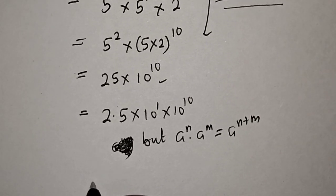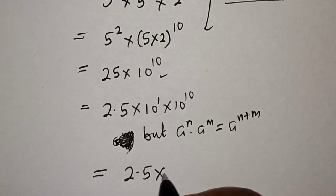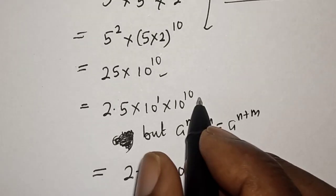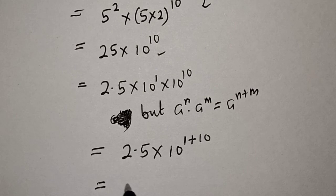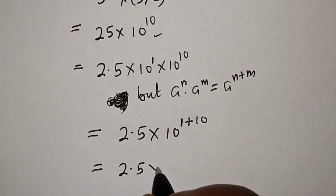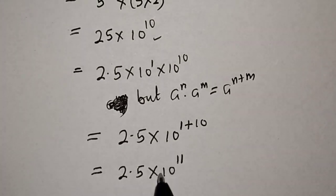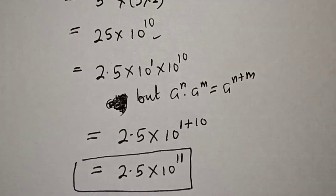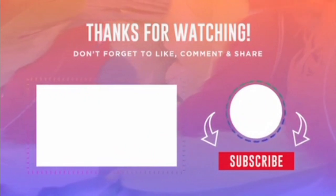Then this is equal to 2.5 times 10 raised to the power of 1 plus 10. So this is equal to 2.5 times 10 raised to the power of 11. And that is our final answer. If you enjoyed the class, please don't forget to like, share, comment and subscribe. Thank you.